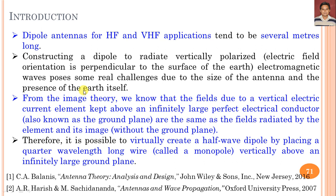By using image theory, the fields due to a vertical electrical current element placed on an infinitely large perfect electric conductor (also known as the ground plane) are the same as the fields radiated by the element and its image without the ground plane. This is the basic principle of image theory. Therefore, it is possible to create a virtual half-wave dipole by placing a quarter-wavelength long wire—called a monopole—vertically above an infinite large ground plane.